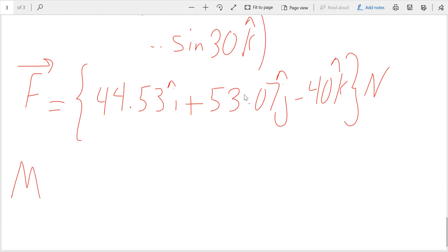So M is the cross product R cross F. First row is IJK. Second row would be the position vector which would be 0.55, 0, negative 0.2. And the third row would be my force vector: 44.53, 53.07, and the third component would be negative 40.